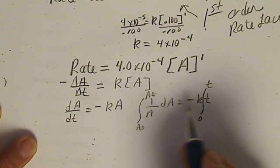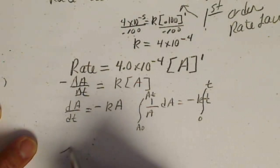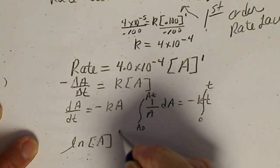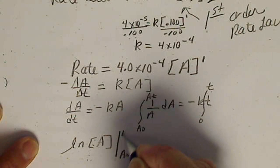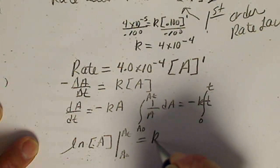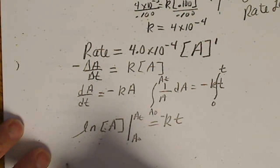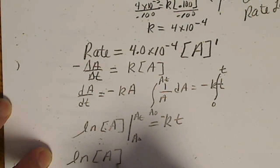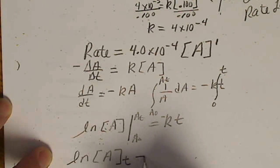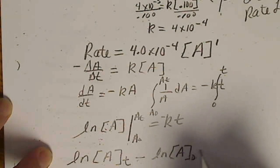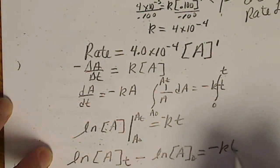And that K is a constant, so that comes out of the integral sign. We integrate the time from 0 to time T. So if we do this, we'll end up with the natural log of A evaluated at A naught and A of T equals negative K T.